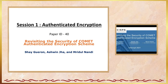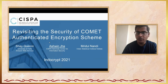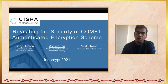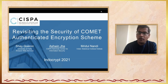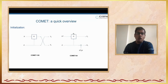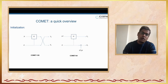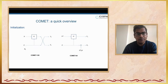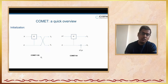Thanks, Ian, for the introduction. I hope the slides are visible now. So let's start. As Yan mentioned, the talk is on the security of Comet Authenticated Encryption Scheme. Comet is a nonce-based authenticated encryption scheme. Let's first look at the construction itself. We have an initialization phase where you have the nonce and the master key K. Depending upon the variant of Comet — Comet has two variants, Comet 128 and Comet 64 — we do different things in the initialization.